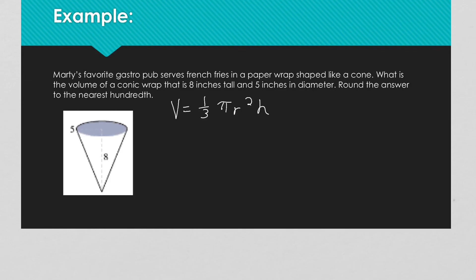Marty's favorite gastropub serves french fries in a paper wrap shaped like a cone. What is the volume of a conic wrap that is 8 inches tall and 5 inches in diameter? Don't forget, we need the radius, and this tells us the diameter. So round the answer to the nearest hundredth. If the diameter is 5, our radius is half of that — 2.5.